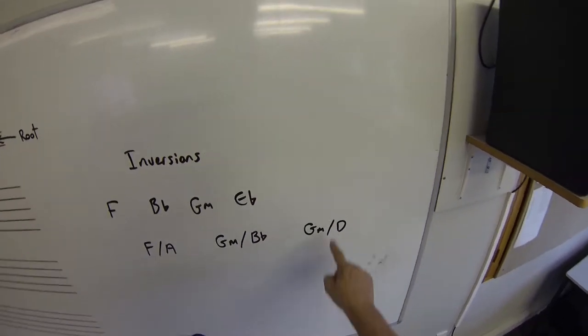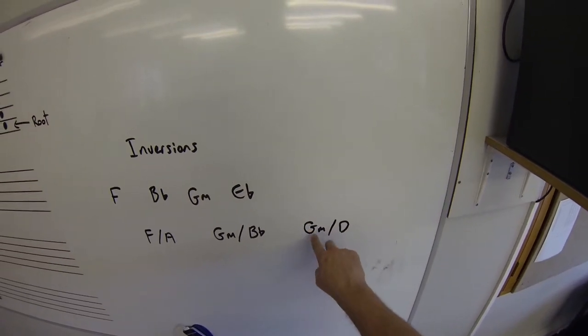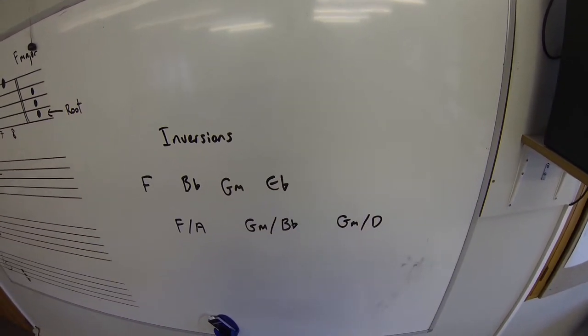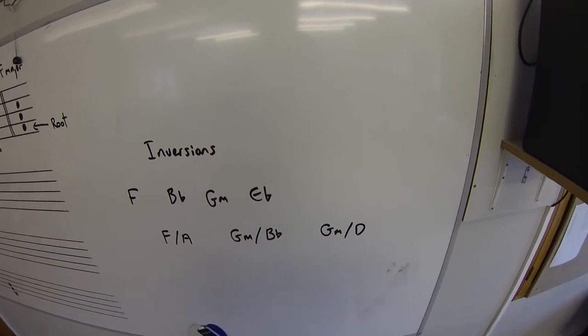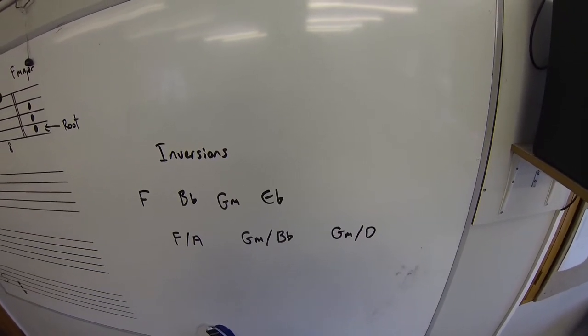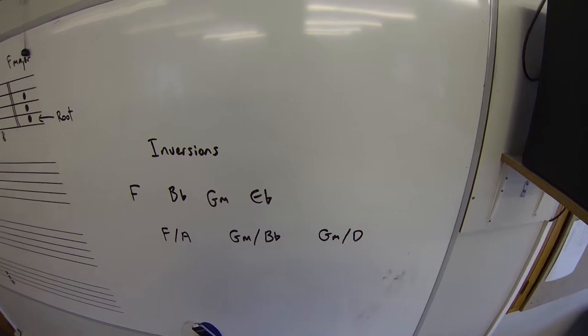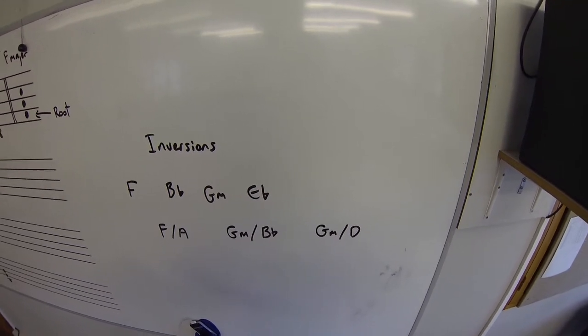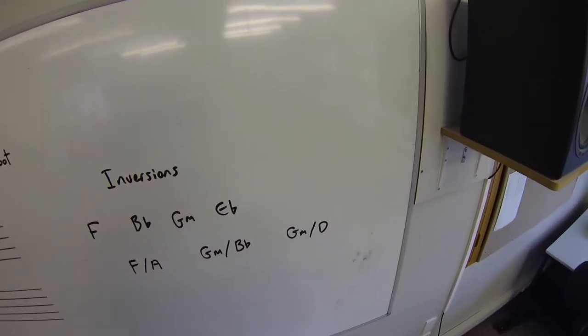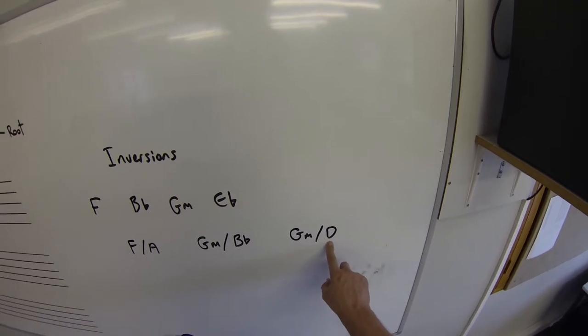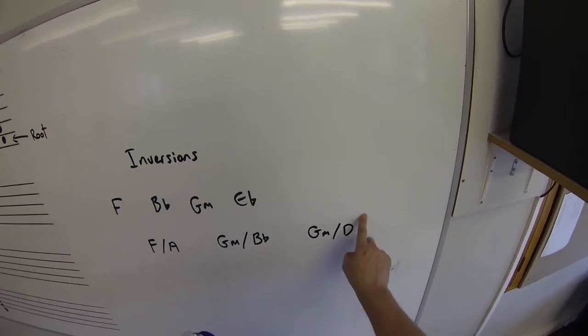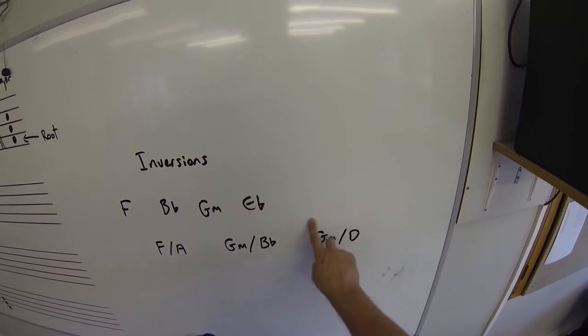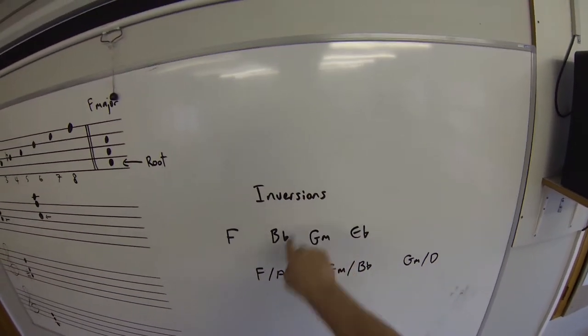So you see, everybody has a lot of flexibility here with how they voice the chord. Some guitar chords may sound better further up the neck, and then others might sound great in their context right down the bottom of the neck. But where the bass sounds in relation to the chord that everybody is making together creates what we call an inversion.